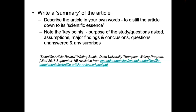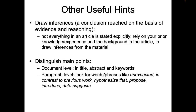You can also refer to 'Scientific Article Review Writing Studio' by Duke University Thomson Writing Program. Draw inferences or conclusions based on evidence and reasoning — not everything in an article is stated explicitly. Rely on your prior knowledge, experience, and the article's background to draw inferences. Distinguish between main points at the document level — title, abstract, and keywords — and at the paragraph level, looking for phrases like 'unexpected,' 'contrast to previous work,' 'hypothesis proposes,' or 'data suggested.'